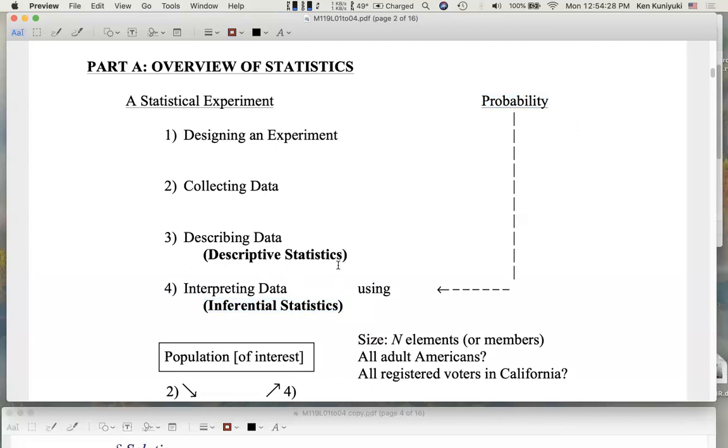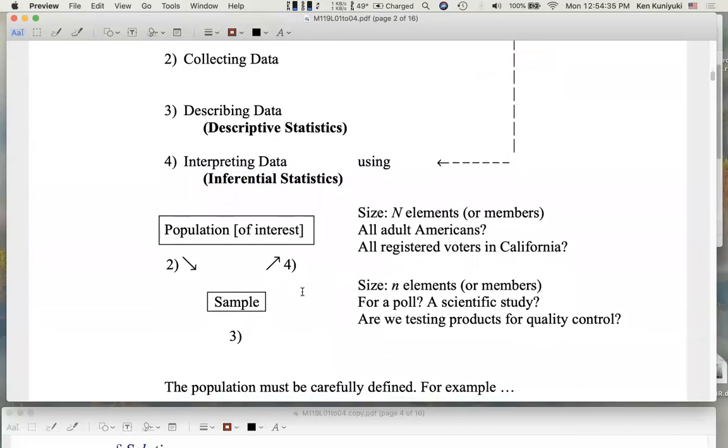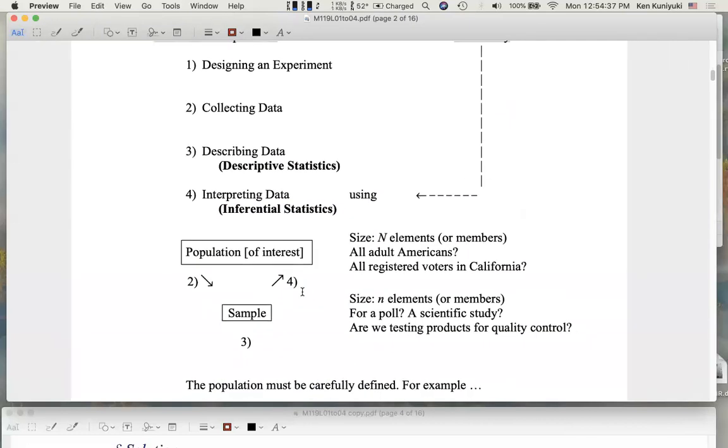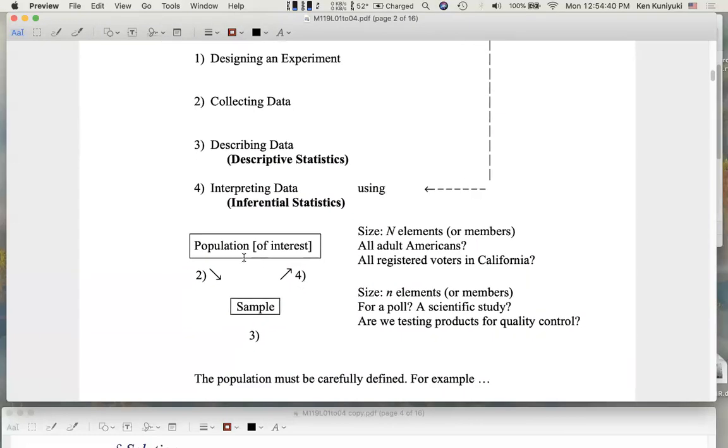So let's talk about the idea of designing an experiment, collecting data, describing data, and then interpreting it. So first of all, as part of designing the experiment, we have to carefully define the population of interest.